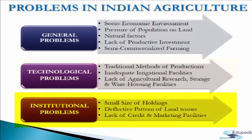Now we come to institutional problems. The first is small size of holdings. The average size of an agricultural holding in India is less than 2 hectares, and per capita cultivable land is just 0.26 hectares. With such uneconomic and fragmented holdings, cultivation can be carried out only by labour-intensive techniques, resulting in low productivity. The next problem is defective pattern of land tenure. The land tenure system in India is totally defective — cultivators have to pay high rent to landlords, and small or landless cultivators are exploited.